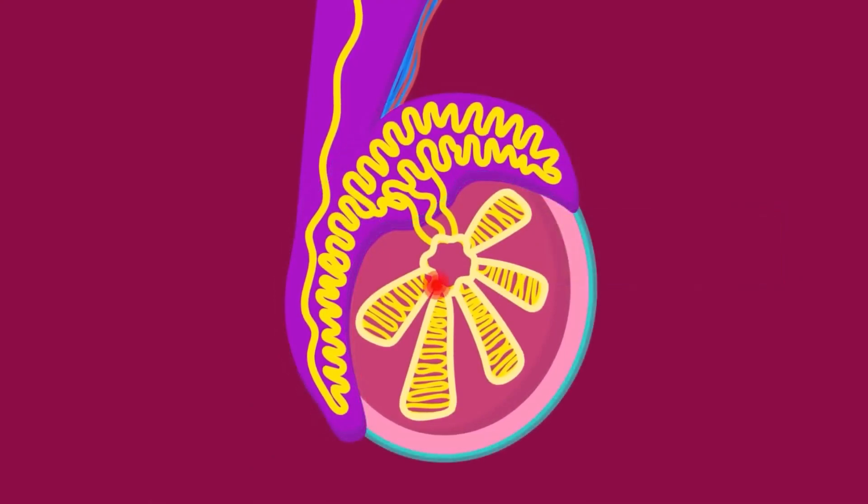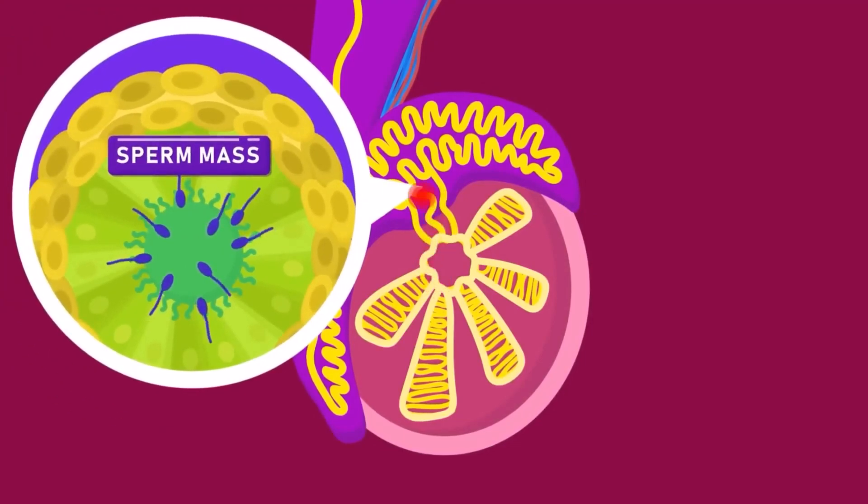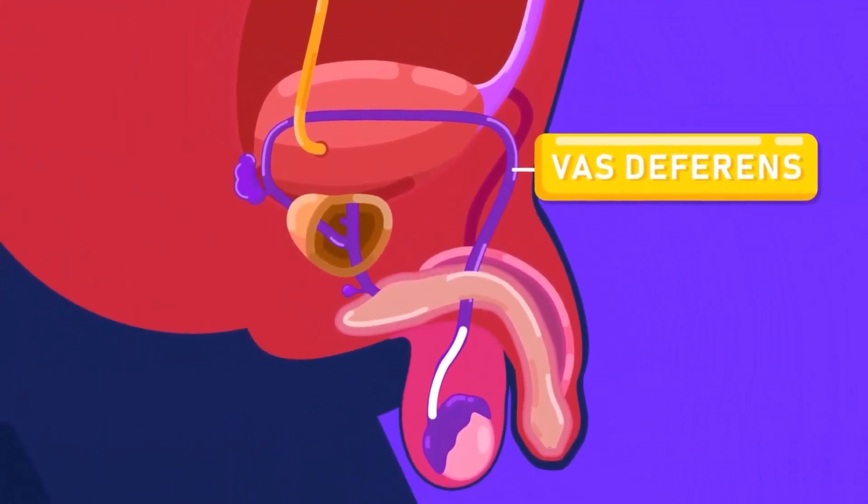The testes produces sperms. The sperms may then be stored in an inactive form in the epididymis before entering the vas deferens or sperm duct.